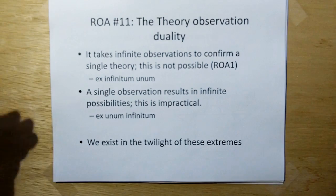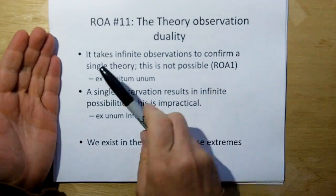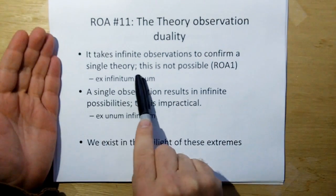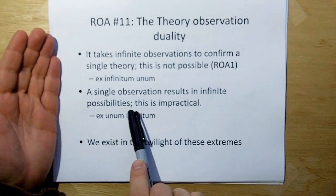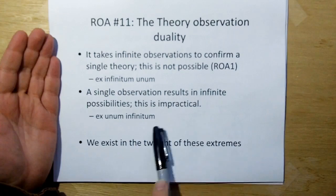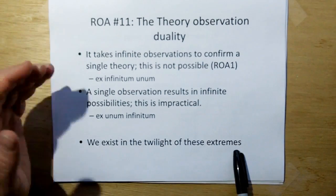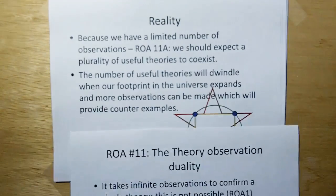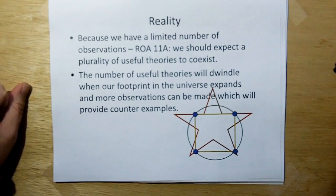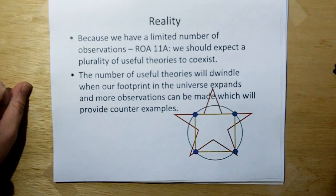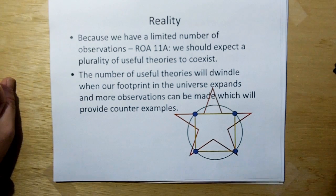Thus, only infinite observations could a single theory be proven. It takes infinite observations to confirm a single theory, which is not possible. And a single observation results in infinite possibilities. This is impractical. So, we exist somewhere in between these extremes. And because we have a limited number of observations, this leads us to rule of acquisition 11A. We should expect a plurality of useful models to coexist.